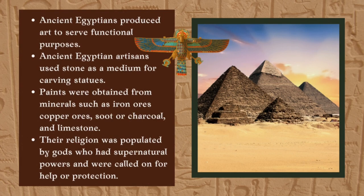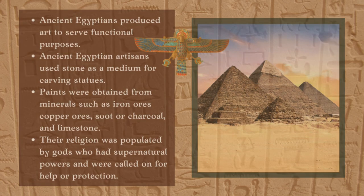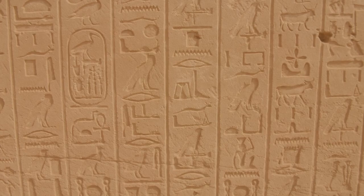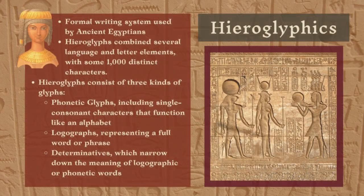Their religion was populated by gods who had supernatural powers and were called on for help or protection. These gods were often found in hieroglyphs, which were a formal writing system used by ancient Egyptians. Hieroglyphs combined several language and letter elements, with some one thousand distinct characters.